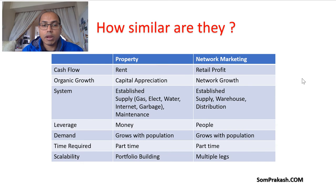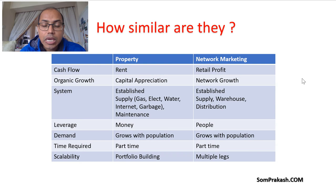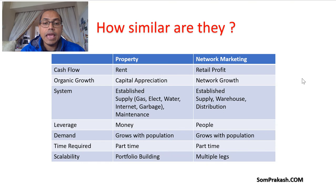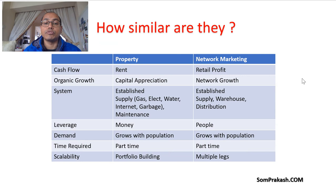Let's talk about property and network marketing. First is cash flow. There are two ways you make money in both network marketing and property. One is instant or immediate cash flow, and another is organic growth. In property, if you buy a property and rent it out, you get rental income as cash flow every month — or per night if you're doing Airbnb or serviced accommodation. In network marketing, the instant cash flow is your retail profit — if you sell a product or service, you make money from that retail profit.